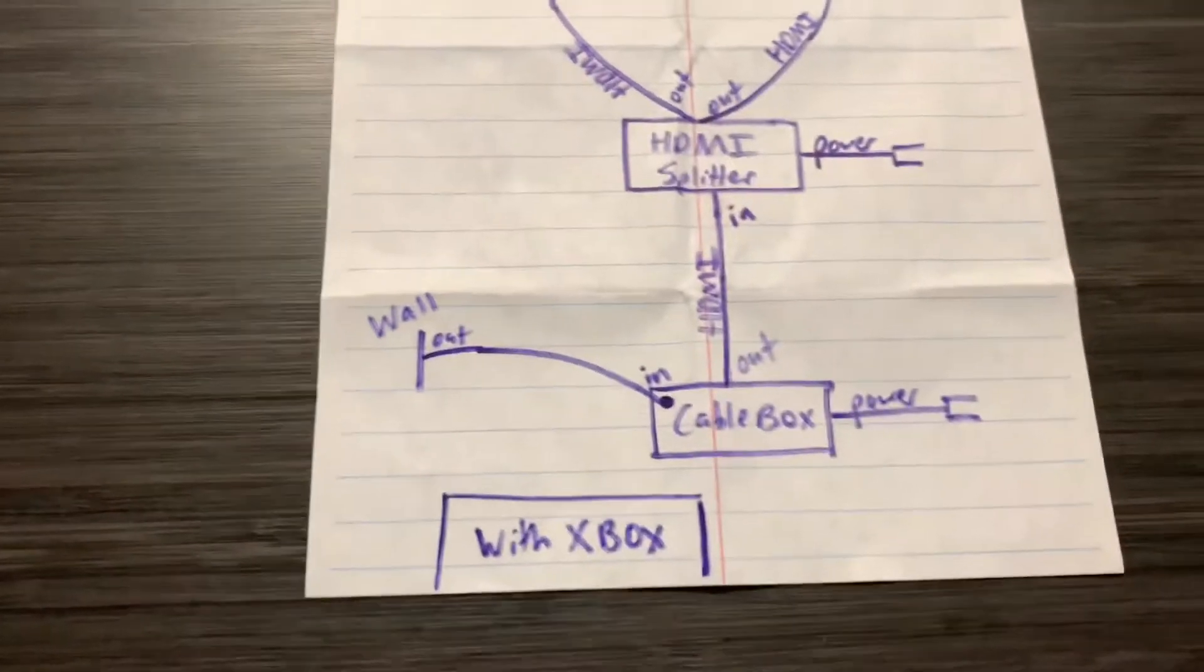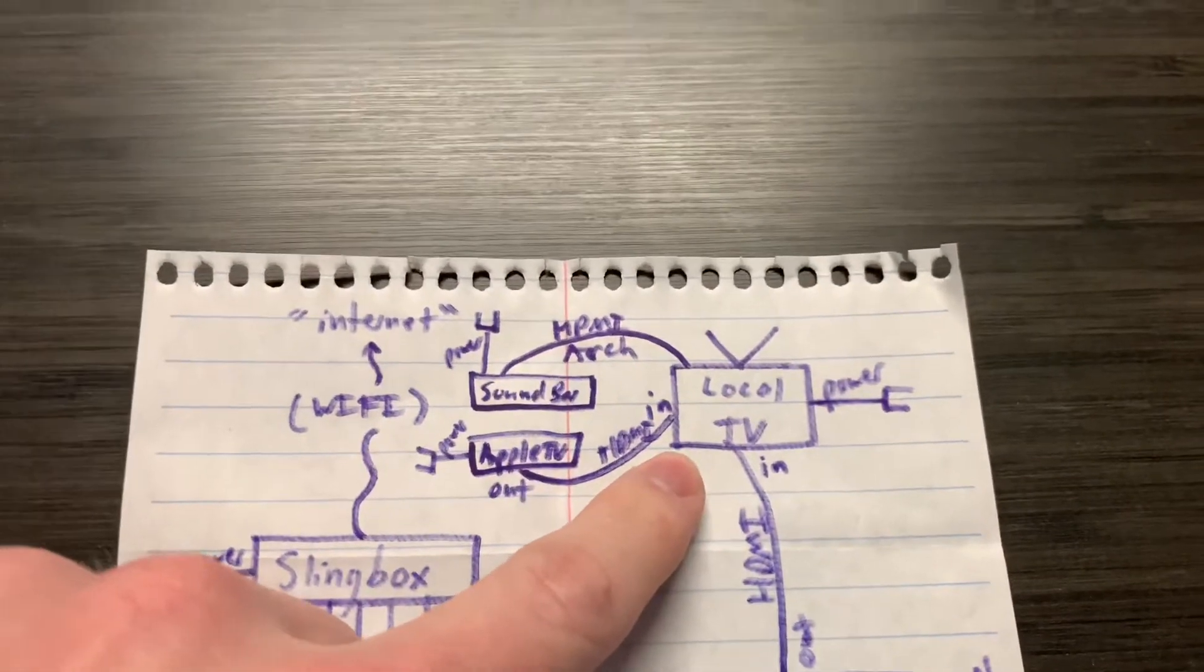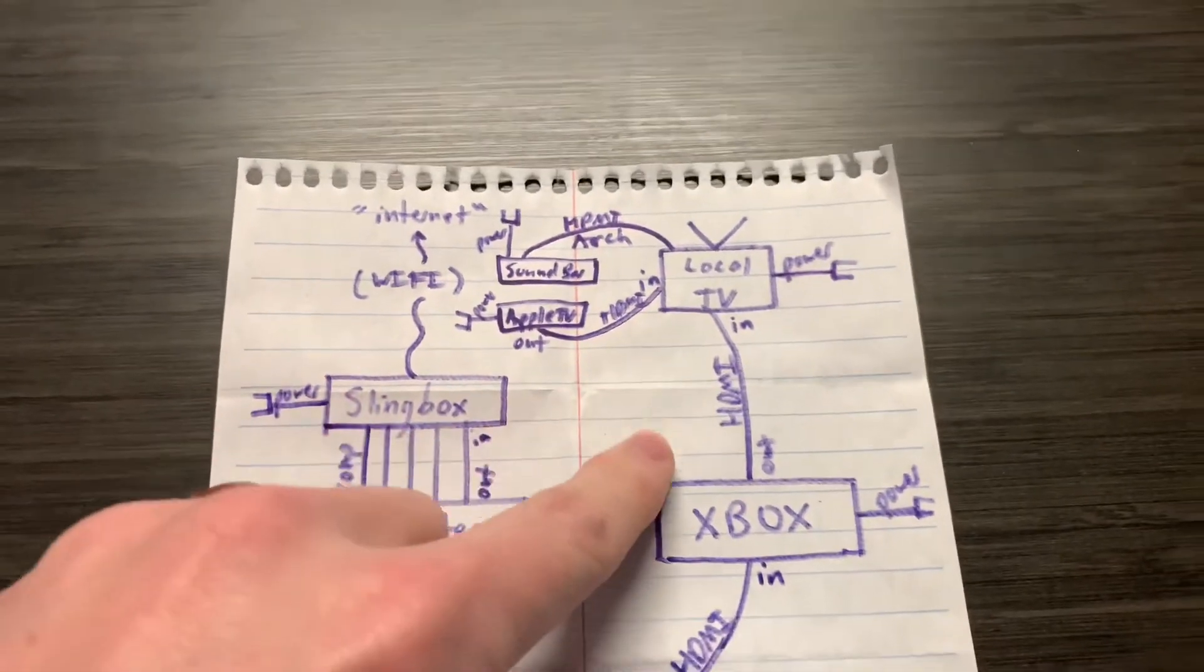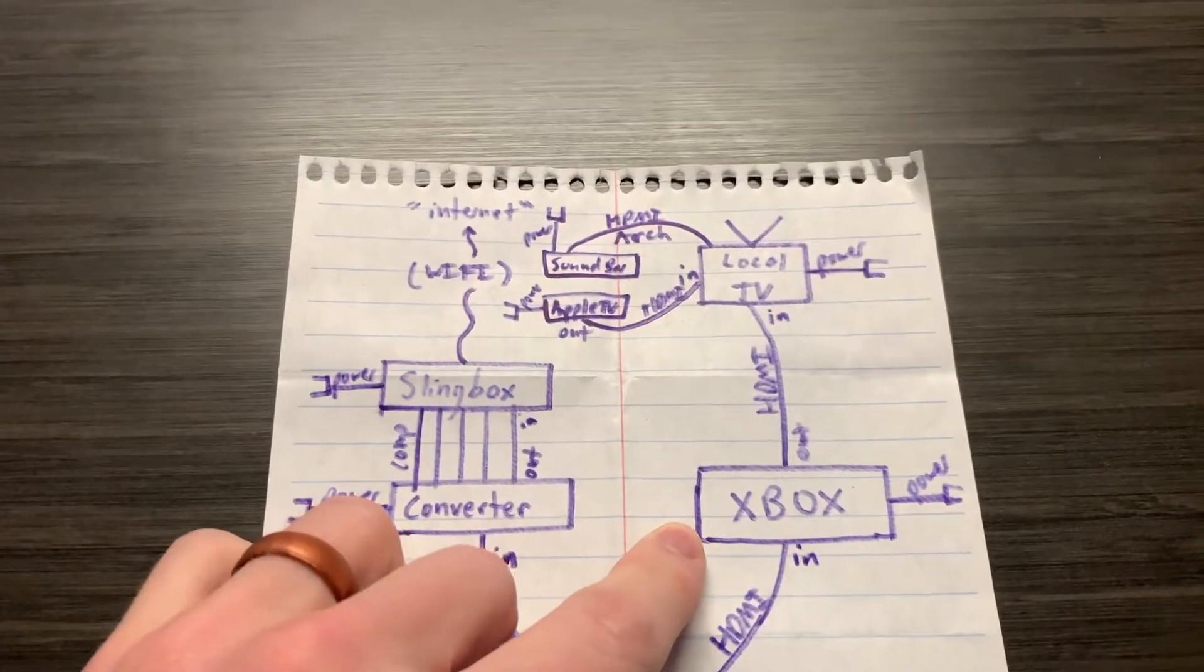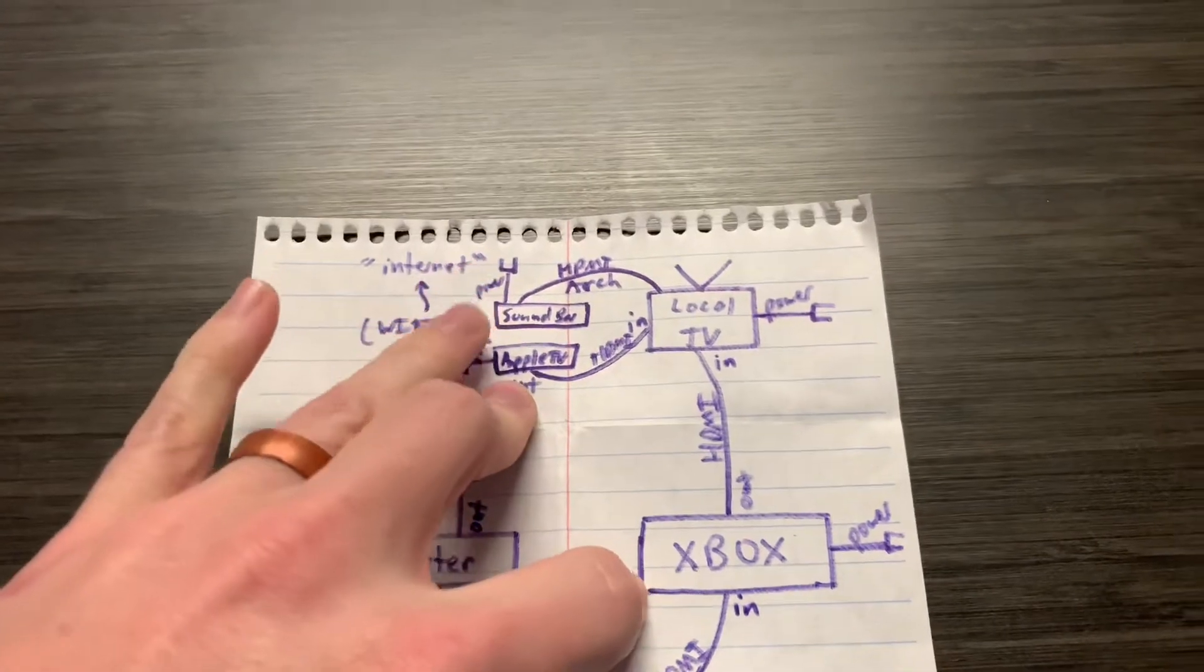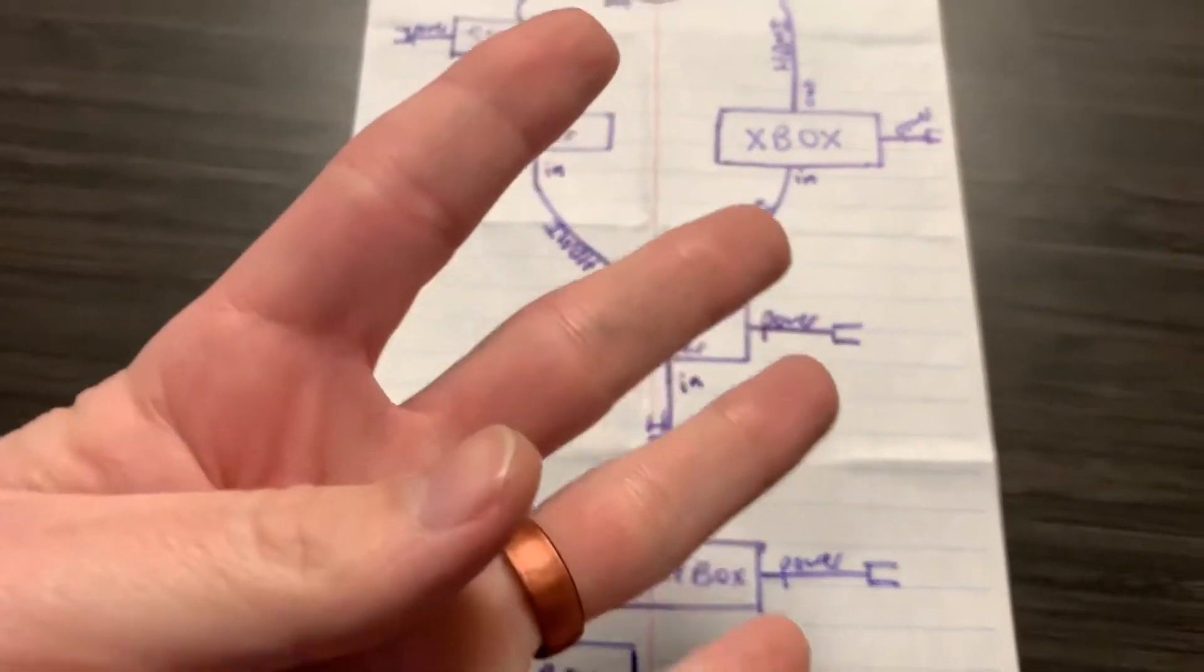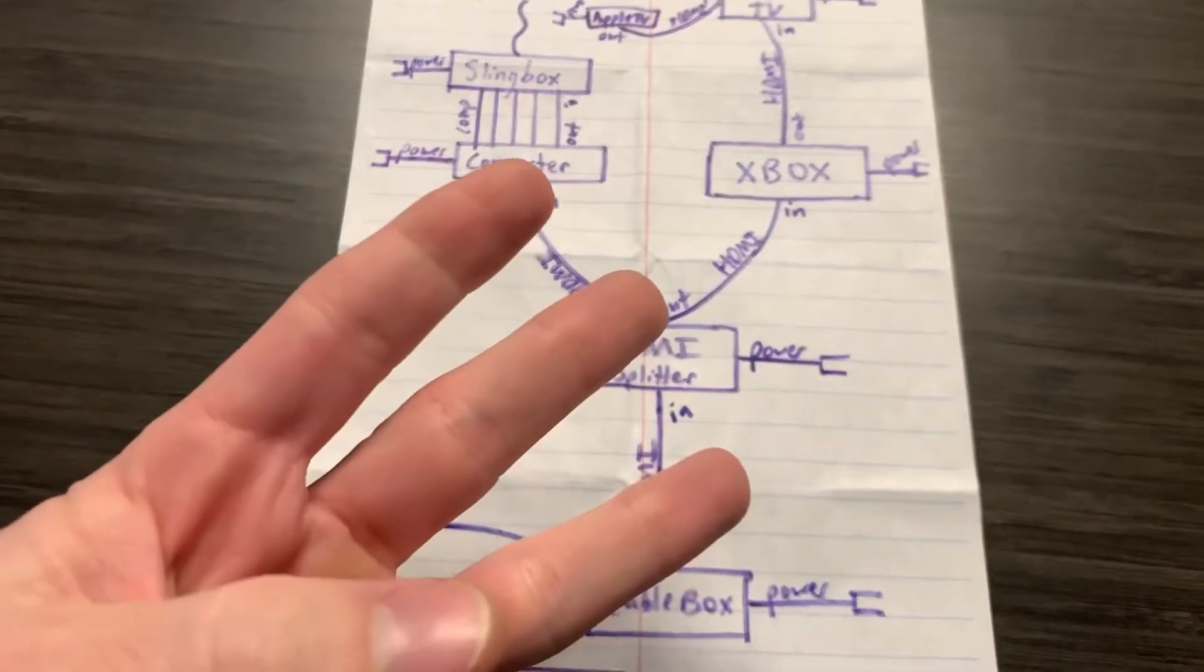The difference is at home, I only had three HDMI inputs on my local TV, which raised a problem because I had an Xbox, I had an Apple TV, I had a soundbar and I had a cable box that I need to plug into it, which is four. I only had three inputs.